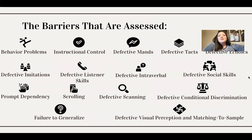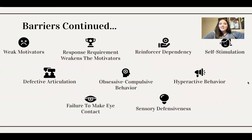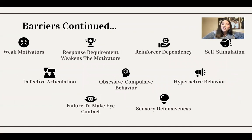We're going to be looking at some of the 24 barriers within the barriers assessment. Some examples would be defective imitations, defective scanning, defective mands, and prompt dependency — which is one that we see oftentimes with kiddos with autism. We also have failure to generalize, reinforcer dependency, defective articulation, sensory defensiveness, and self-stimulation.